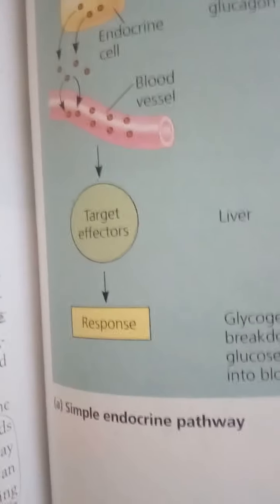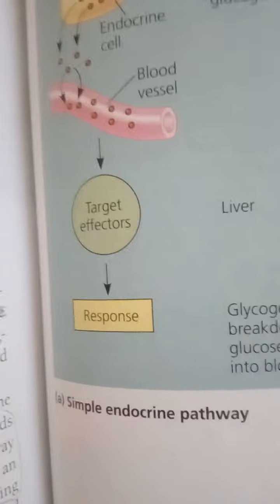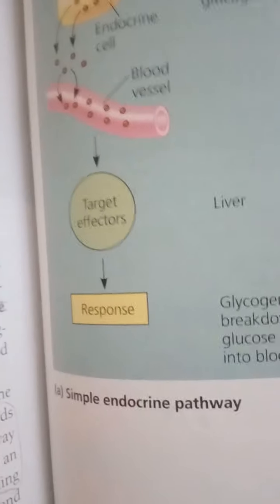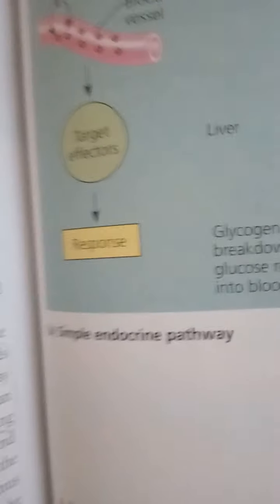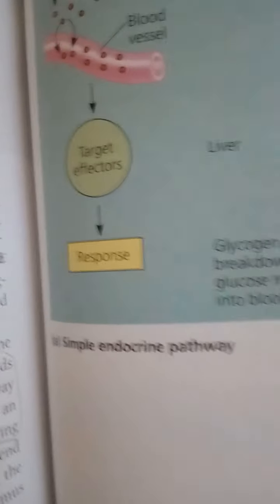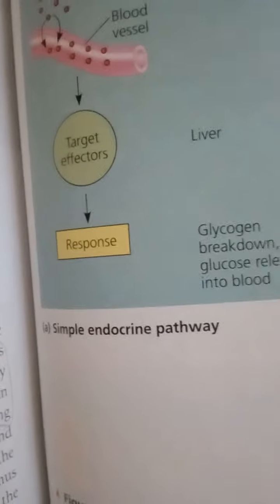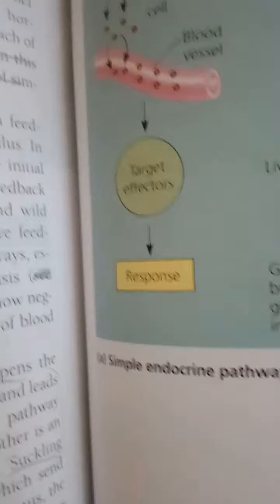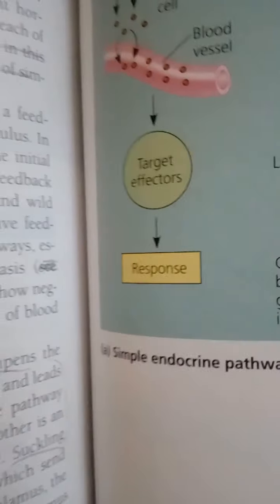Regardless of their chemical nature, signaling by any of these molecules involves three key events: reception, signal transduction, and response. Reception of the signal occurs when the signal molecule binds to a specific receptor protein in or on the target cell. Each signal molecule has a specific shape that can be recognized by that signal's receptors.